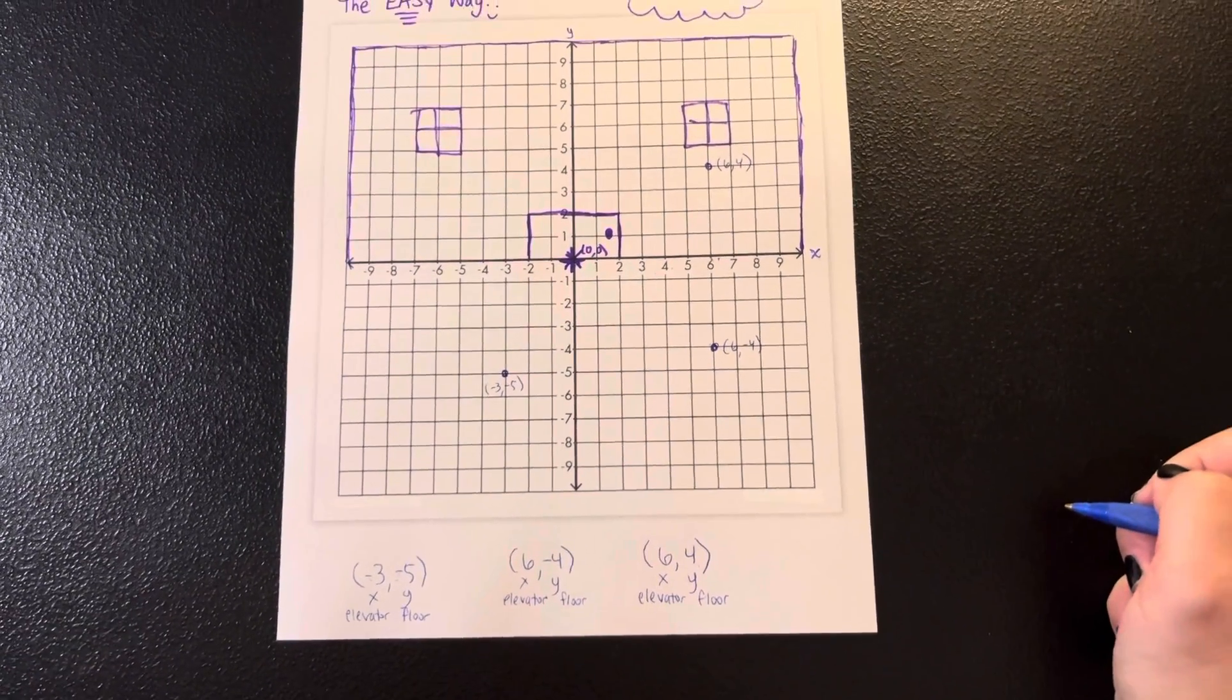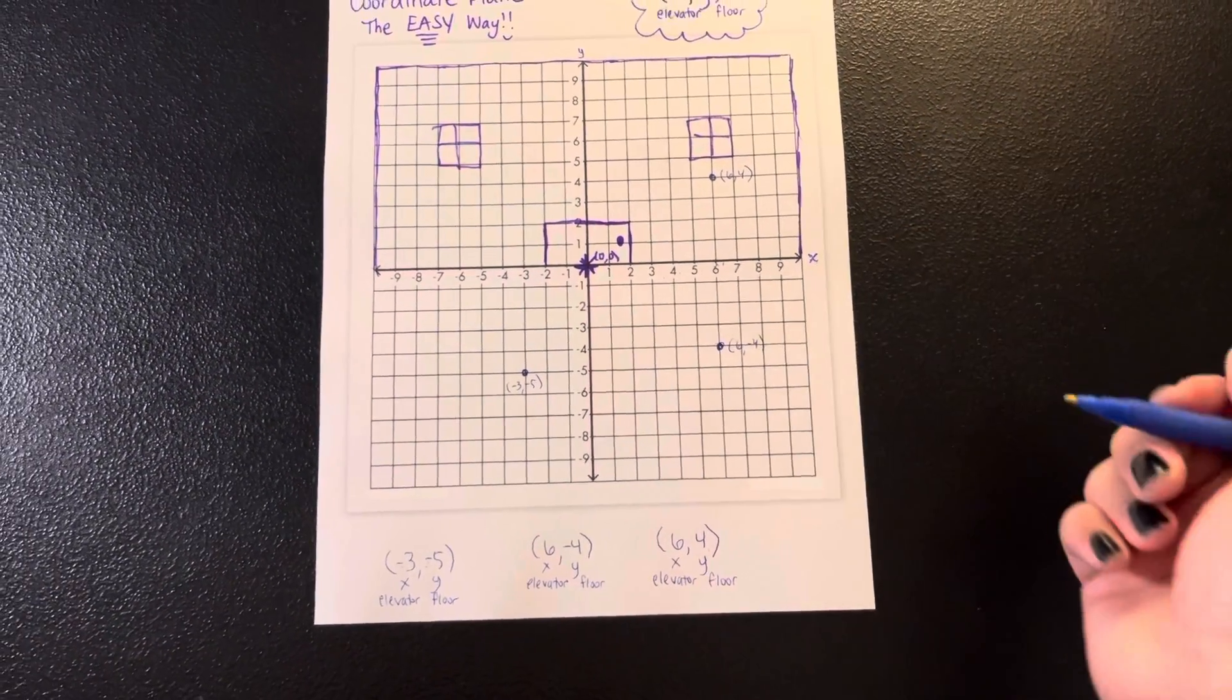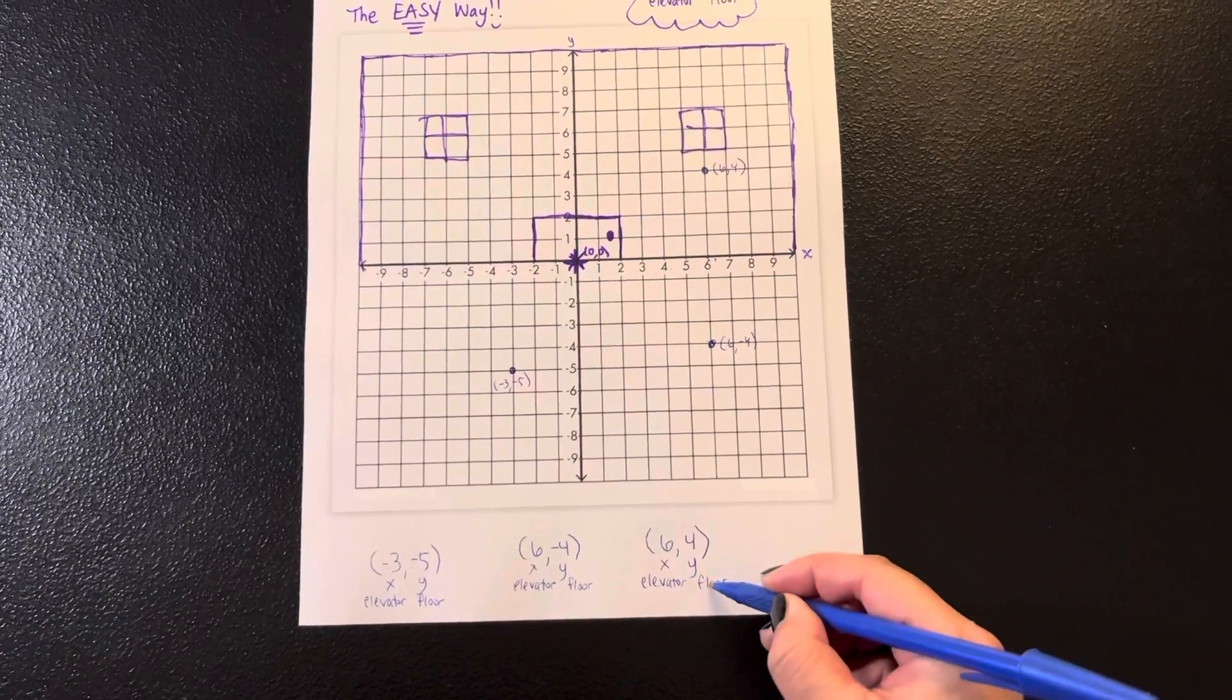And this works for any points as long as you think of it as a building and you think of elevator first and then the floor. So in this video, I showed you how to graph points on a coordinate plane the easy way.